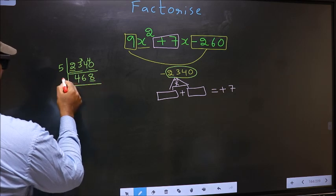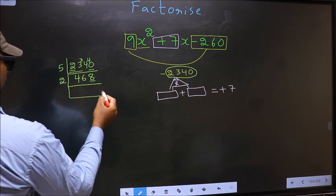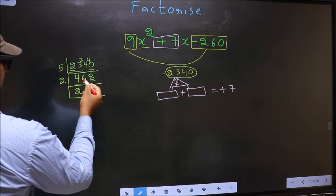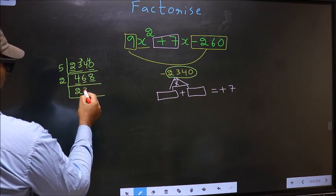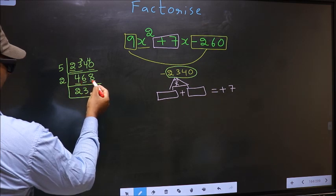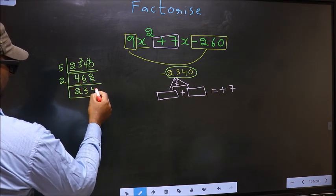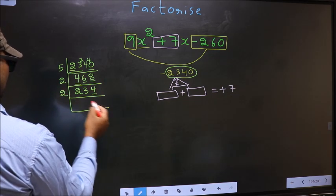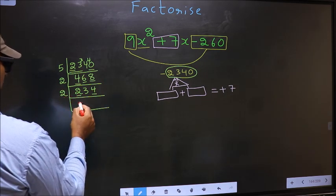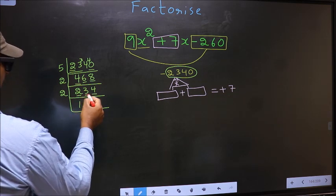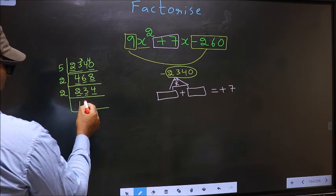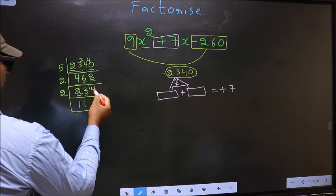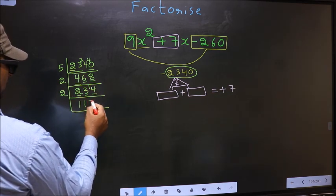Now last digit 8 even, so take two. First number 4, when do we get 4 in 2 table? 2 twos 4. The other number 6, 2 threes 6. The other number 3, a number close to 3 in 2 table is 2 ones 2. 3 minus 2 is 1, 1 carried forward 14. When do we get 14 in 2 table? 2 sevens 14.